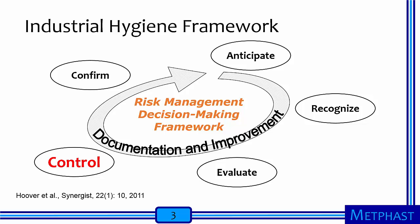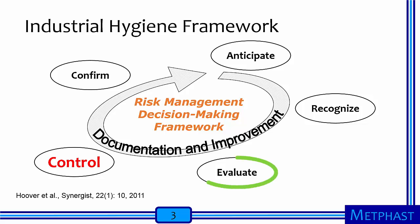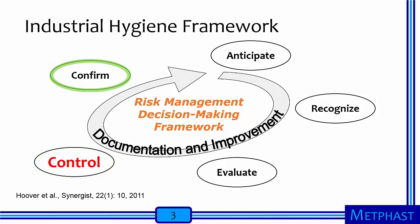First, I would like to recall the industrial hygiene framework. Risk management in industrial hygiene involves a circular path as follows. The industrial hygienist must anticipate and recognize hazards in the workplace. Then hazards are evaluated, which involves measurement and comparison to occupational exposure limits. If needed, controls are put in place and confirmed that they work. Then the cycle repeats with hopefully continuous improvement in managing all hazards within a workplace. It is important to document all observations and results throughout this process.